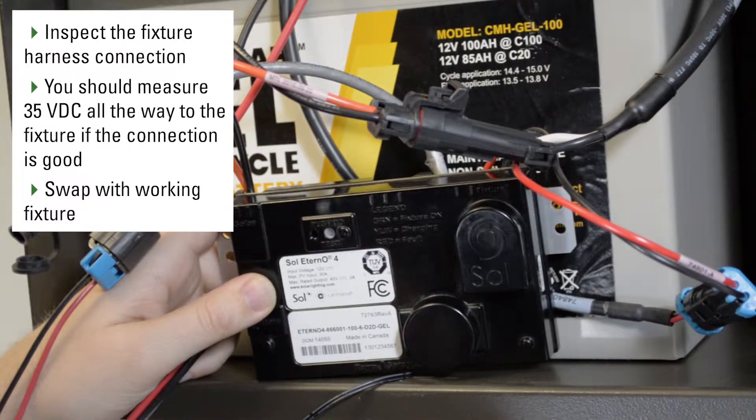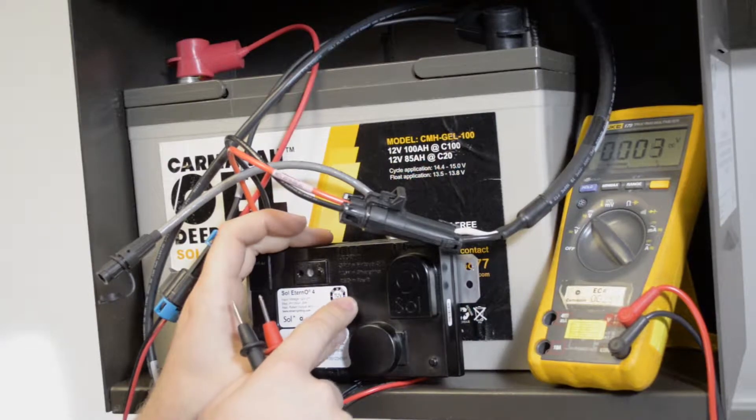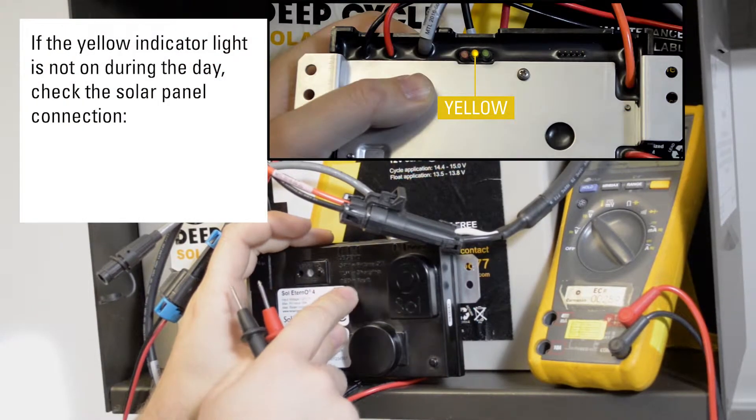If either of them are an issue, replace the harnessing or replace the fixture. If the yellow charge indicator light is not on during the day, you want to check your panel connection.